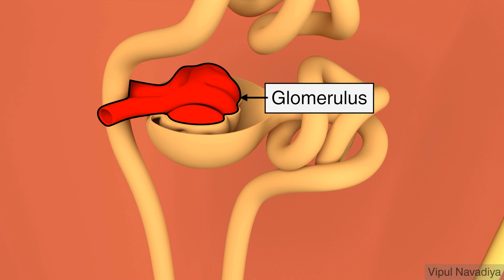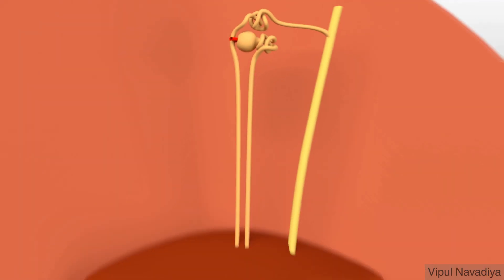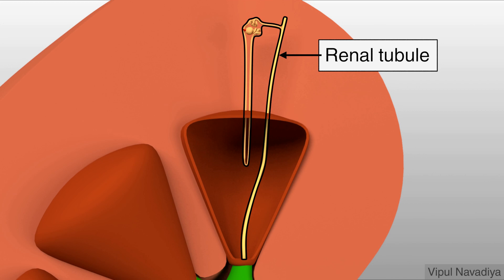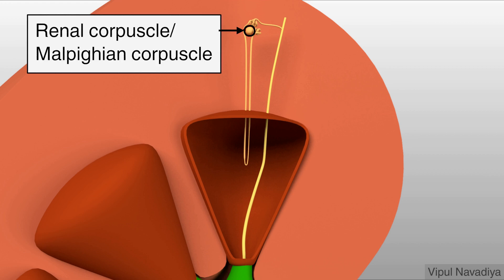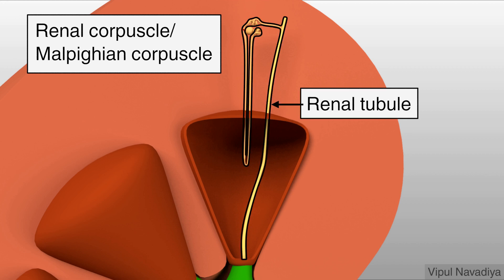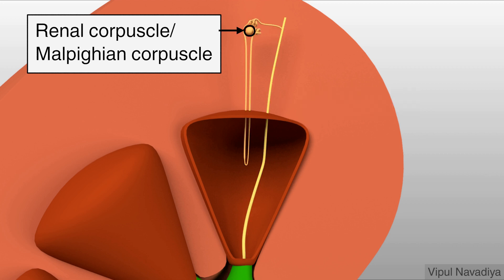Glomerulus, which is a tuft of capillaries, and renal tubule, which is an epithelial structure. Functionally, it can be divided into two parts: renal corpuscle or Malpighian corpuscle, where glomerular filtration takes place, and renal tubule, where tubular processing takes place. In this video, we will focus on renal corpuscle.